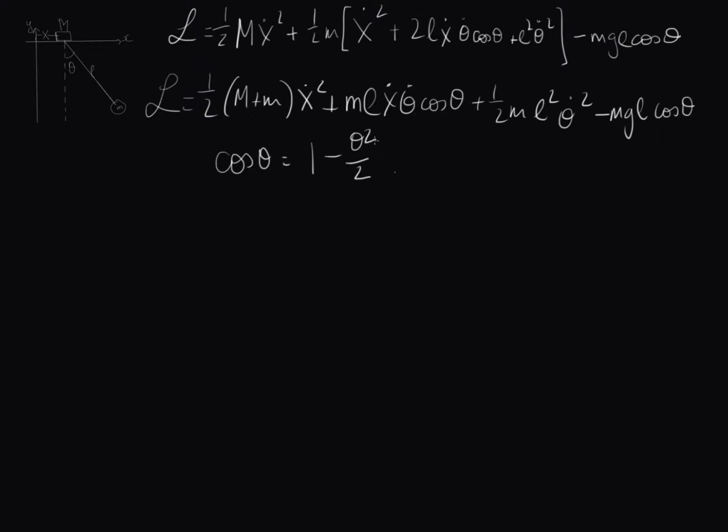So we're actually also going to, for this middle term here, throw out the theta squared. It's because of the presence of this derivative here. So now let's rewrite this equation with the small angle approximation, which will give us our Lagrangian is 1 half big M plus little m x dot squared plus M L x dot theta dot plus 1 half M L squared theta dot squared minus M G L 1 minus theta squared over 2.